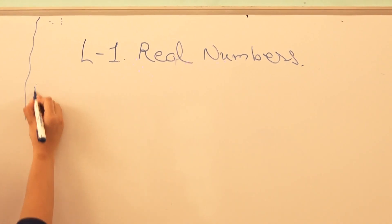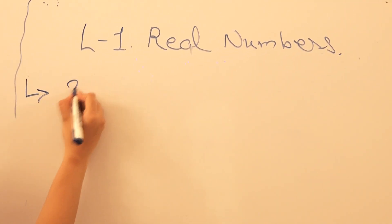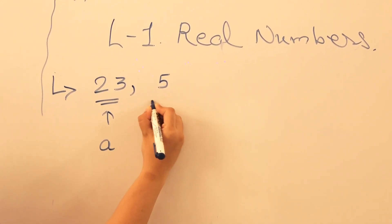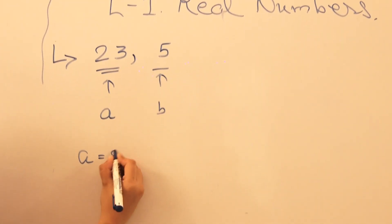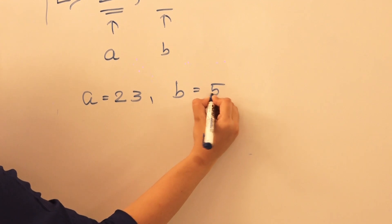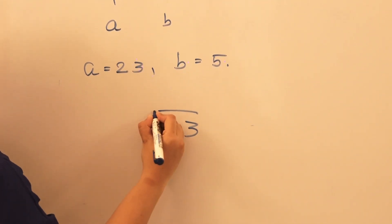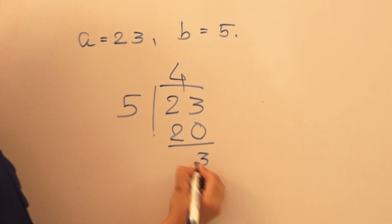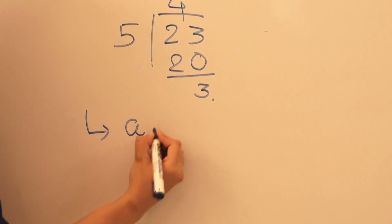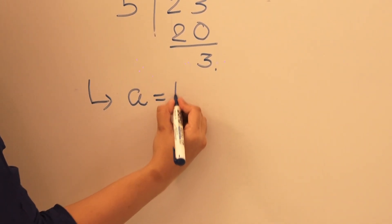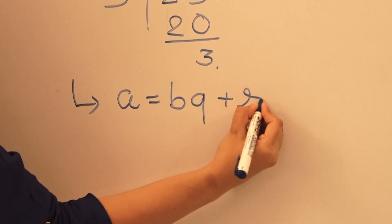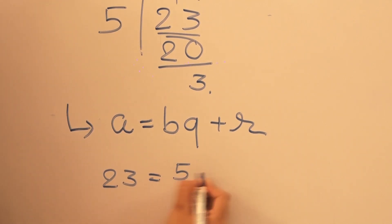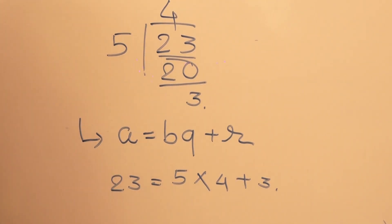Let us take an example. Here I am taking 2 integers: 23 and 5. Always consider the bigger integer as a and the smaller as b. So here a is equal to 23 and b is equal to 5. Let us divide 23 by 5: 5 fours are 20, remainder 3. As per Euclid's Division Lemma, the equation a equals bq plus r gives us: 23 is equal to 5 multiplied by 4 plus 3.